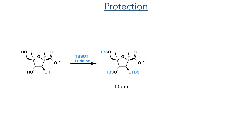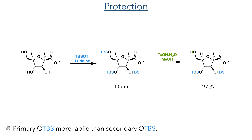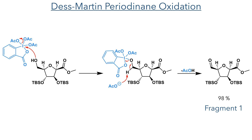In the next step, the hydroxyl groups were protected as TBS groups using TBS-triflate and lutidine, and the primary TBS group was then selectively deprotected using tosylic acid and methanol in a 97% yield. This can be achieved as primary silyl groups are more labile than secondary. With this primary hydroxyl group now revealed, it could be oxidised using Dess-Martin periodinane. The oxygen attacks the iodine centre, eliminating an acetate, which then acts as a base to deprotonate the molecule, forming the carbon-oxygen bond to complete fragment 1 in a 98% yield.